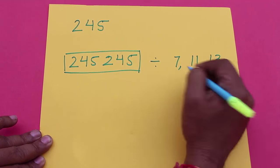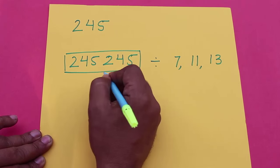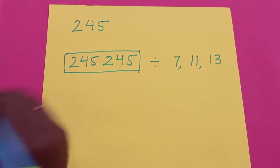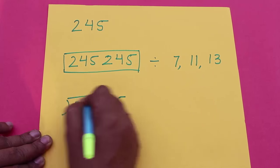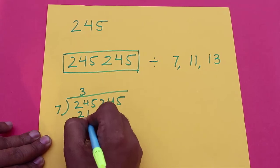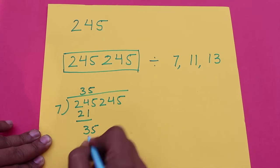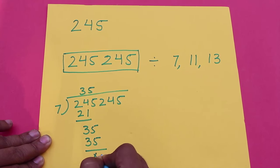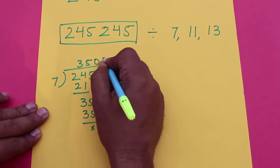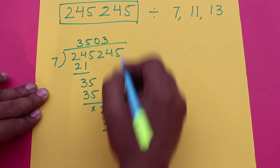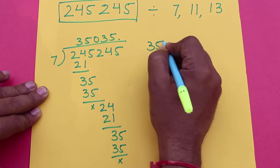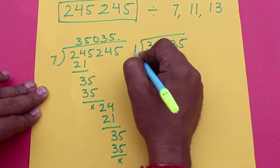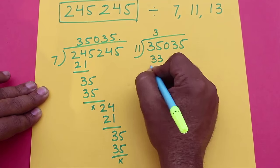These are all consecutive prime numbers. On dividing 245245 by 7, we will get 35035. Now we will divide 35035 by the second consecutive number, 11.